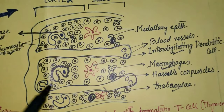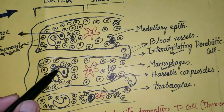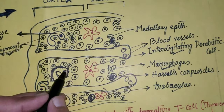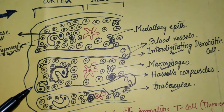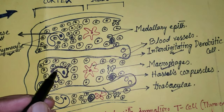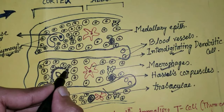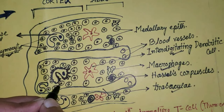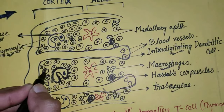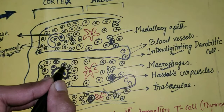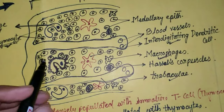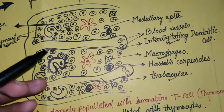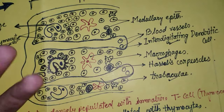Thymocytes interact physically with these nurse cells. NARS cells are actually thymic epithelial cells — matlab thymus ke andar jo epithelial cells hote hain, woh hote hain ye NARS cells. These thymic epithelial cells have long membrane processes by which they remain in contact with thymocytes, which is essential for their nourishment.